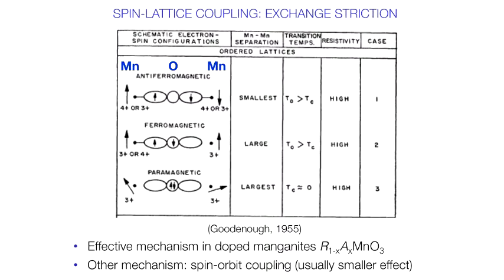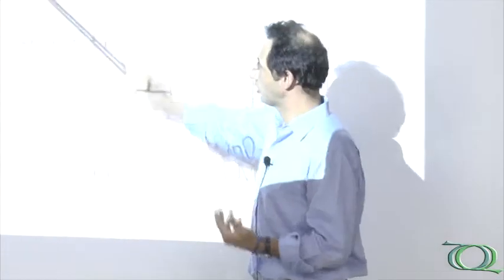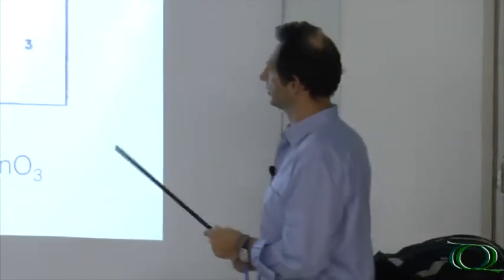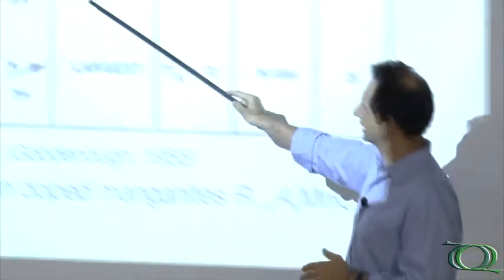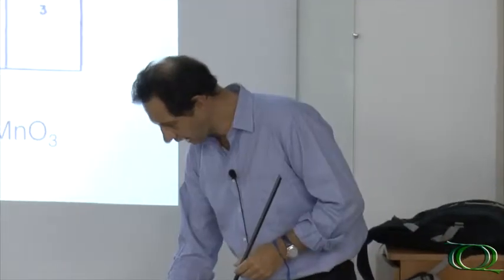So you can have either a Jahn-Teller ion if you have 3+, or a non-Jahn-Teller ion if you have 4+. So chemical doping can change the occupancy of the EG orbital, and therefore can tailor the structural distortions, and since the orbitals can be empty or filled, you can have either antiferromagnetic or ferromagnetic exchange.